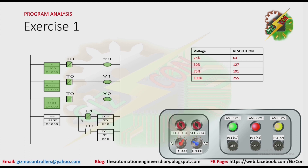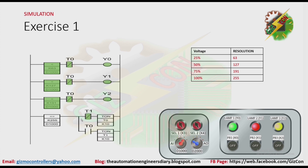As we reduce the value of the analog signal, the lamp will turn off. Let's have our simulation. Okay, that's it. Now let's go to our next exercise.